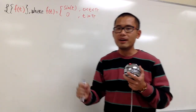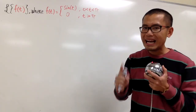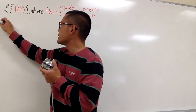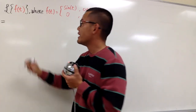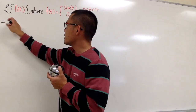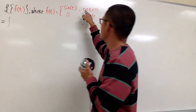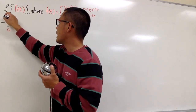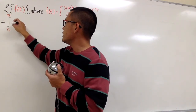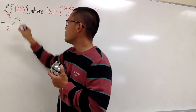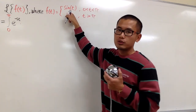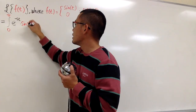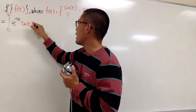When the function is defined piecewise, we have to use the definition of the Laplace transform — namely, we have to write this as integrals. The first integral will go from 0 to π, and we still have e to the negative st multiplied by whichever function applies — namely sin(t) for the first part — and then we have dt.